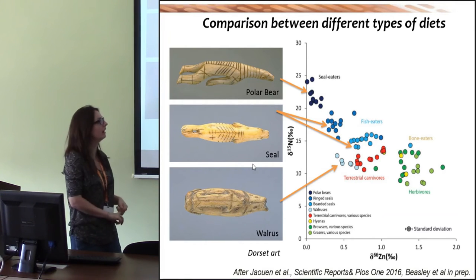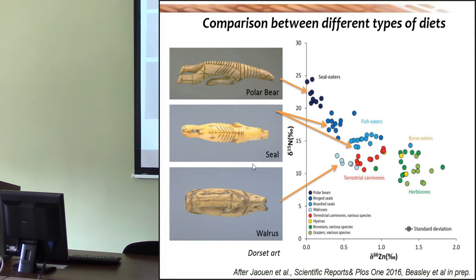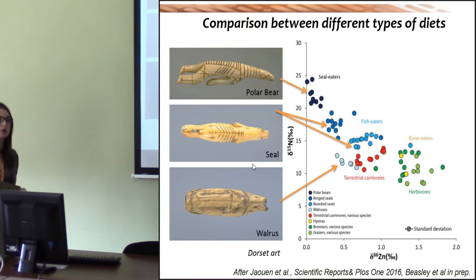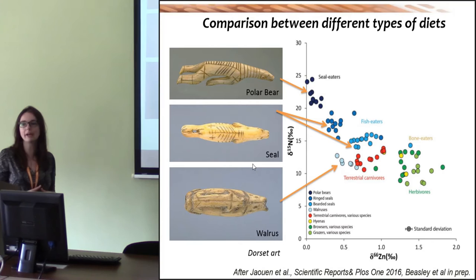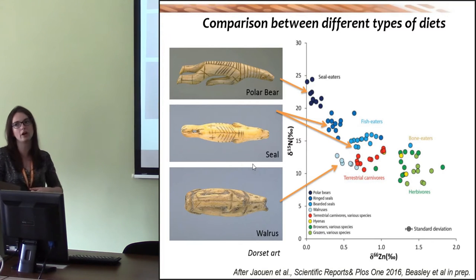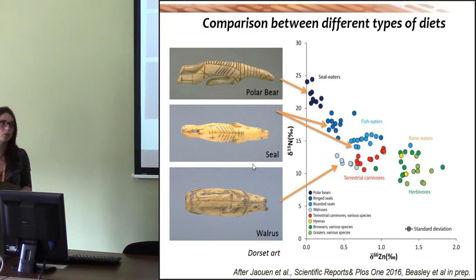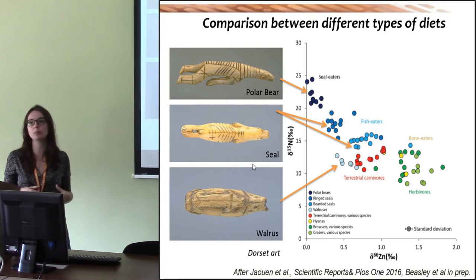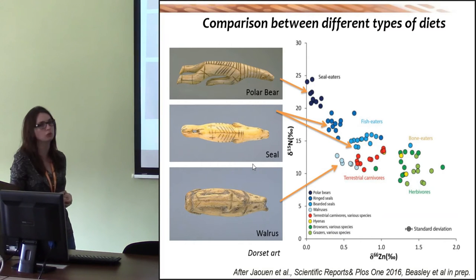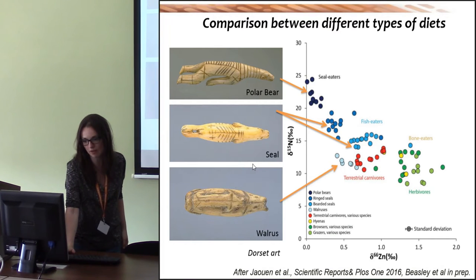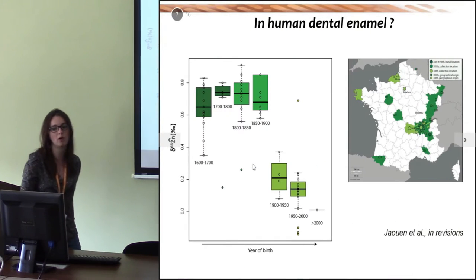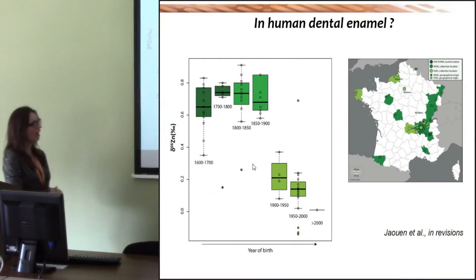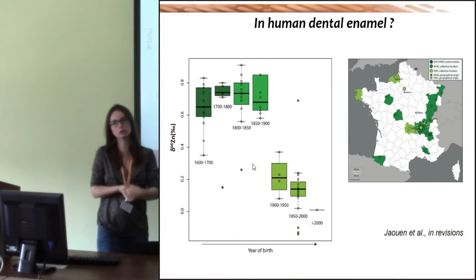However, the walruses fall out of this correlation, which could be explained by the fact that they migrate during the year whereas the other animals are year-round residents. So the zinc isotope composition could be controlled by the diet, but the local isotope composition may also impact the whole food web — which could be a problem if we have high mobility in human populations.